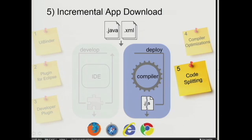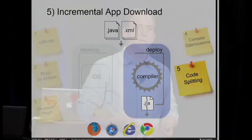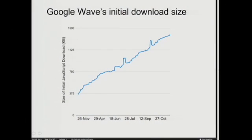We think about it like watching a movie online. You obviously don't want to have to download the entire movie before you can start watching the first bit of it — you want the movie to start immediately and download the rest as you go. That's the idea behind code splitting. A real-world example came from Google Wave, who last October got in touch with us to say, 'Hey guys, we love GWT, but we have an awful lot of functionality planned for Wave, and this is what the size of our initial download looks like as we continue development.' The y-axis shows this curve starting to approach one and a half megabytes of uncompressed JavaScript.